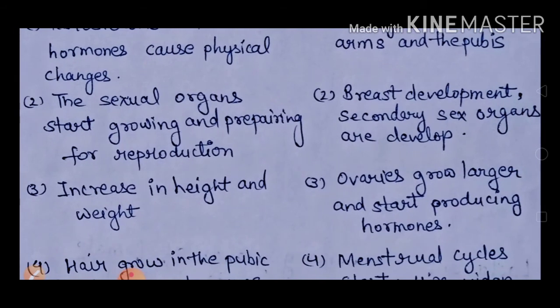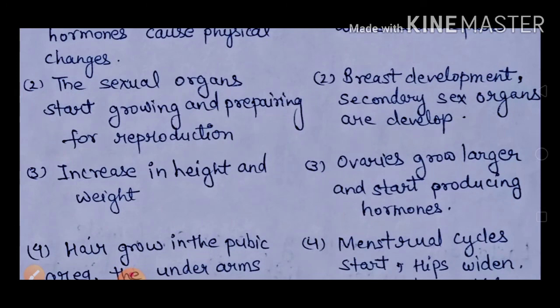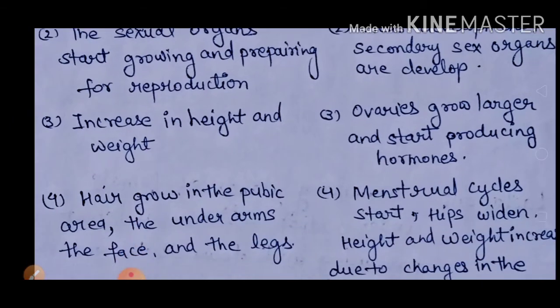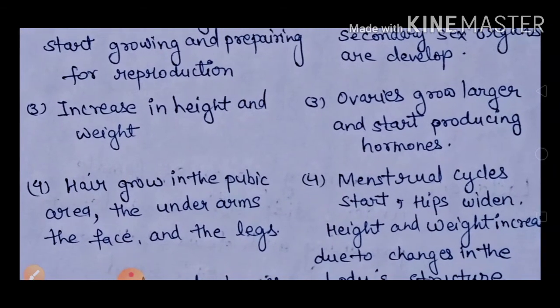There is an increase in height and weight in boys during puberty — height increases and the body develops properly. In girls, the ovaries grow larger and start producing hormones. Hair grows in the pubic area, underarms, face, and legs.